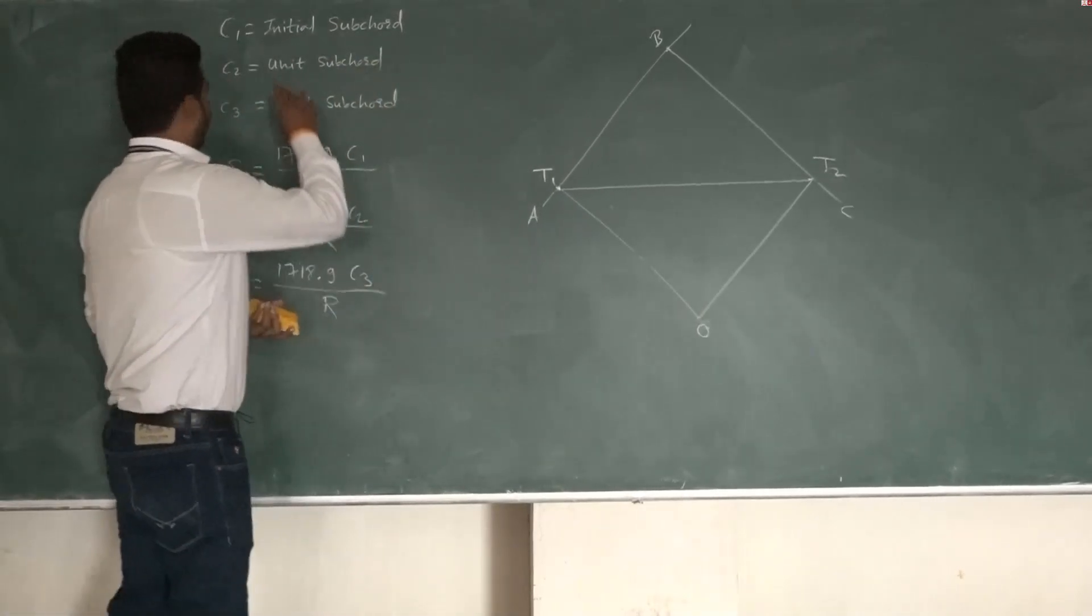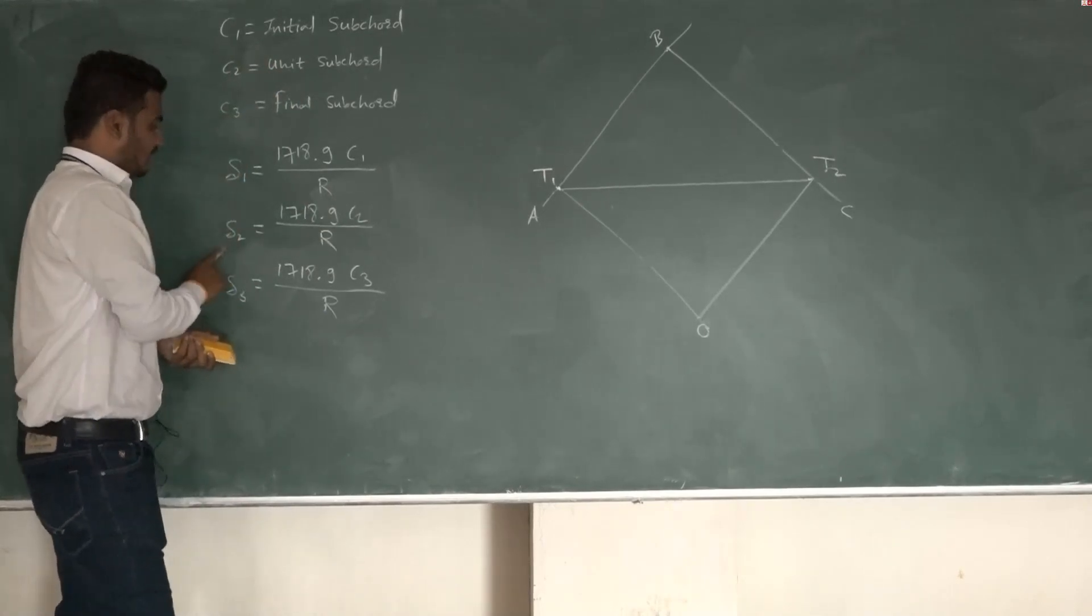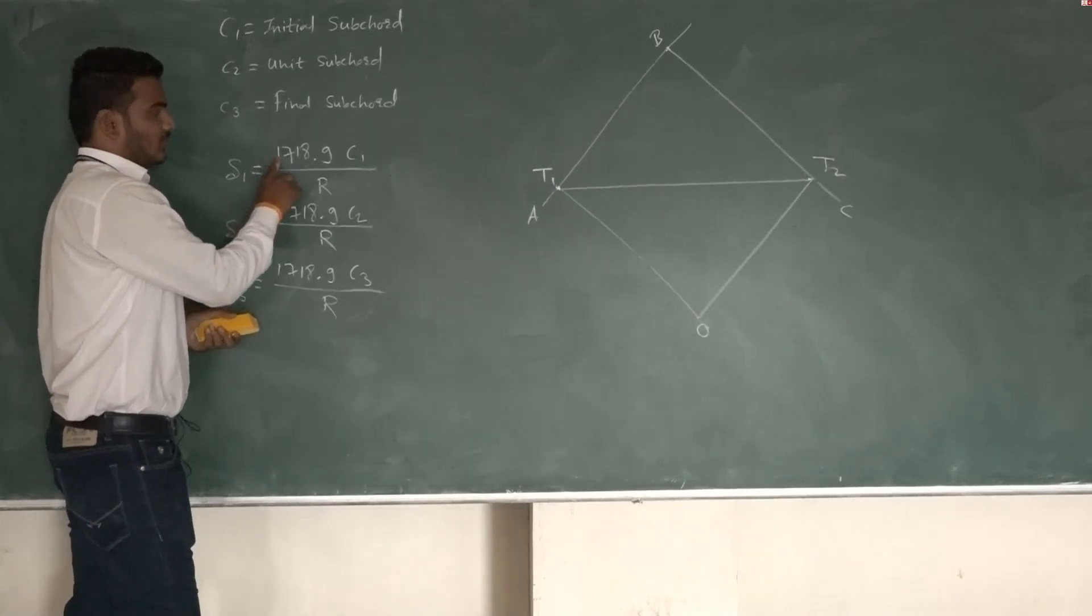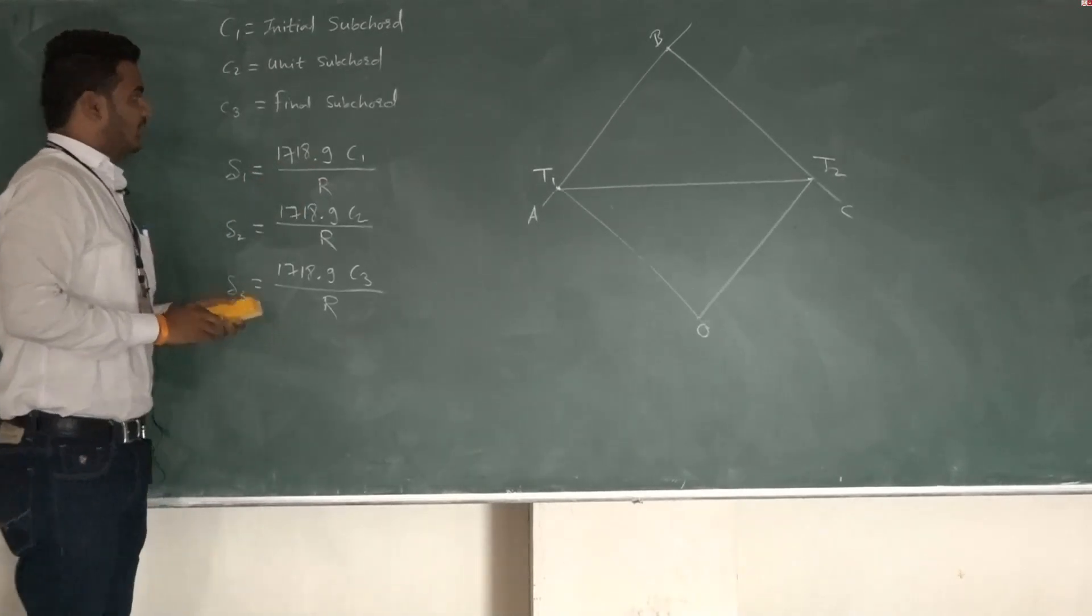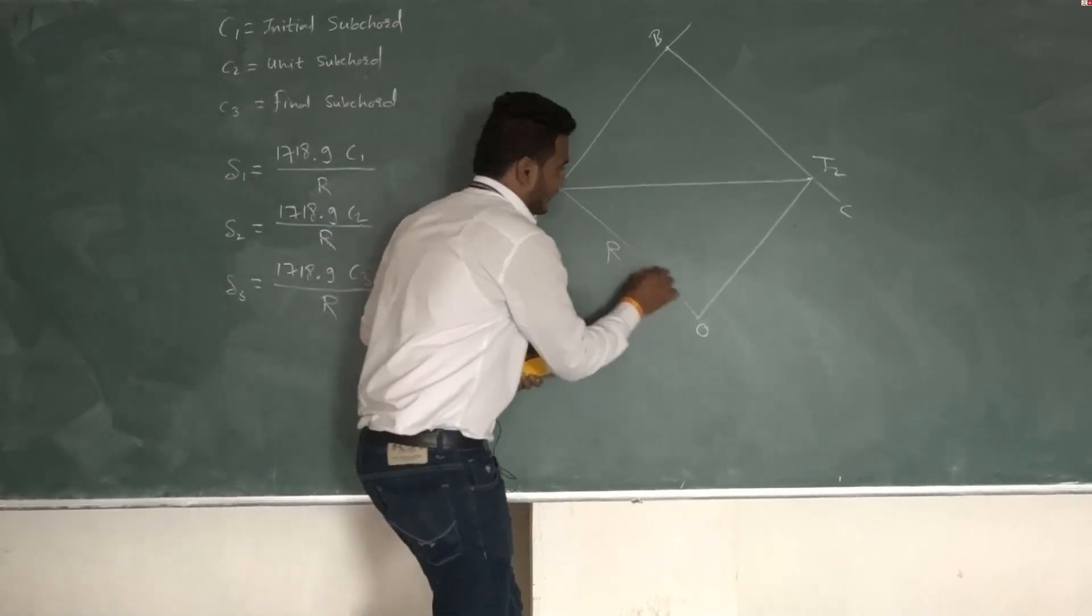Now after getting C1, C2 and C3, find out the deflection angles delta 1, delta 2 and delta 3 by using formula: delta 1 is equal to 1718.9 into C1 divided by capital R, where capital R is the radius of curve.